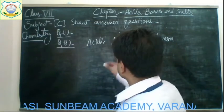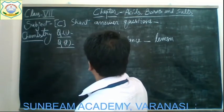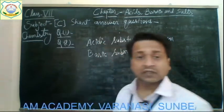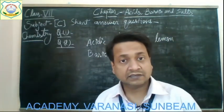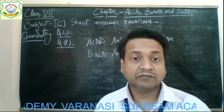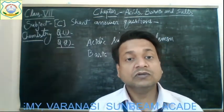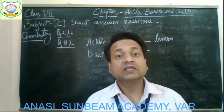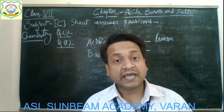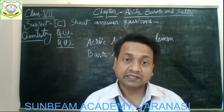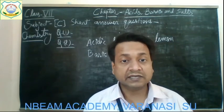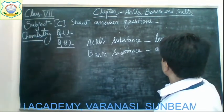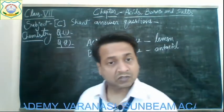For the basic substance, antacid is a good example. Antacid contains a base which is used to neutralize the effect of acid in the stomach, and we feel relieved during acidity. So antacid is a basic substance because it contains a base.